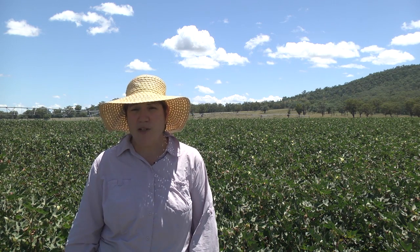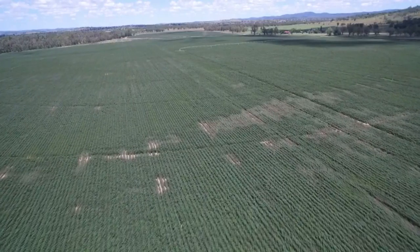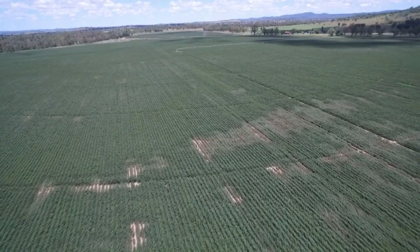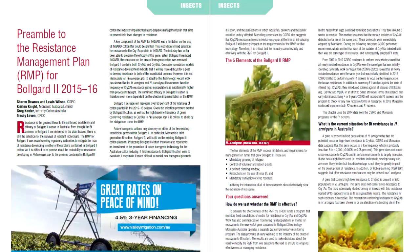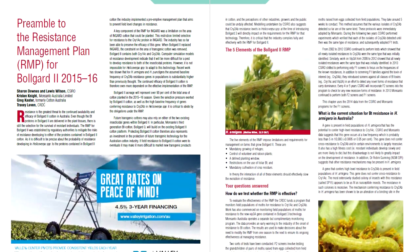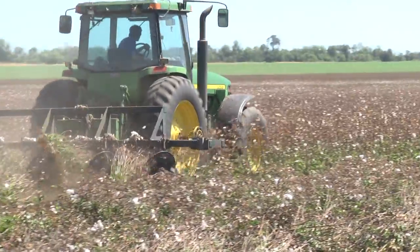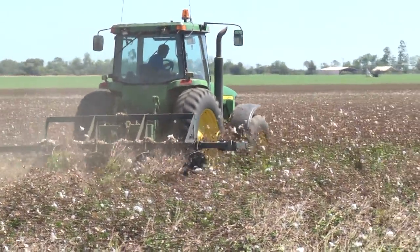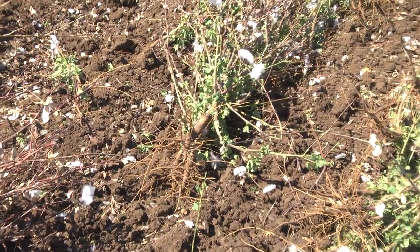Cultivation for management is not recommended because this buries the sclerotes and aids their survival. It is best to have no-till or minimum till to leave the sclerotes on the surface where natural biocontrol can occur. Keeping the trash on the surface for as long as possible before cultivation will aid the breakdown of the sclerotes.